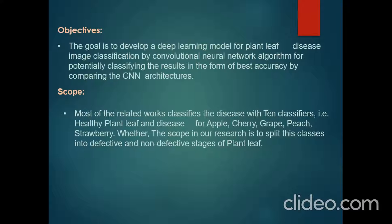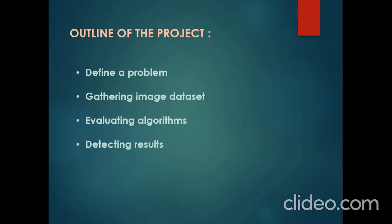We developed a deep learning model for plant leaf disease image classification using a convolutional neural network algorithm, classifying results in the form of best accuracy by comparing CNN architectures. This project is especially useful for youngsters practicing smart farming. The outline covers defining the problem, gathering image datasets, evaluating algorithms, and detecting results.